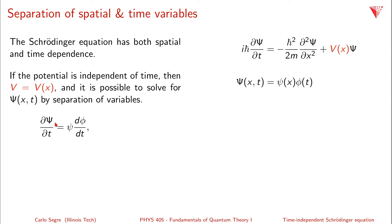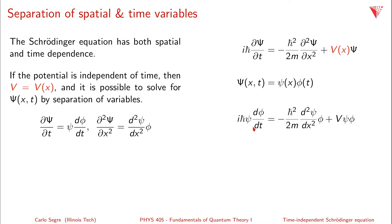The time-dependence of the full wave function is then just ψ times dφ/dt, and the spatial second derivative is also simplified because φ has no spatial dependence, so it's just the full second derivative of ψ with respect to x squared. If I put these back into the Schrödinger equation, I get: i h-bar ψ dφ/dt equals minus h-bar squared over 2m times d²ψ/dx² times φ, plus V times ψφ.